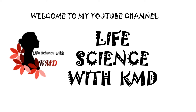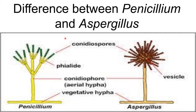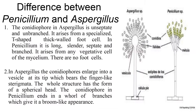Hello everyone, welcome to my YouTube channel Life Science with KMD. Today I'm going to explain the difference between Penicillium and Aspergillus morphologically. The conidiophore of Aspergillus is unseptate and unbranched.